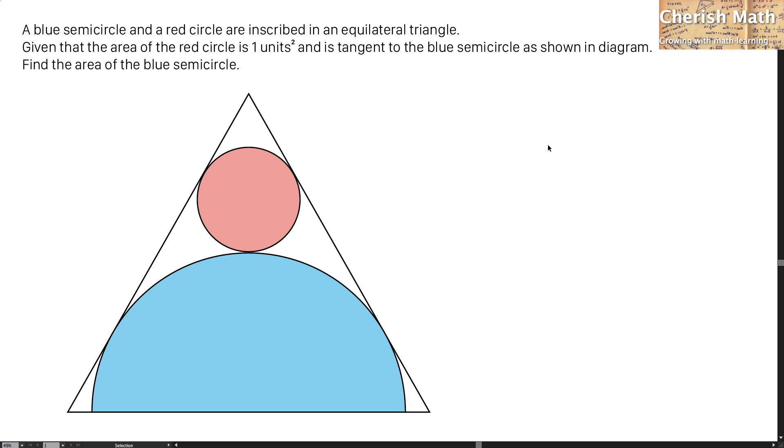Say hi from Cherish Math. This is the problem. A blue semicircle and a red circle are inscribed in an equilateral triangle. Given that the area of the red circle is one unit square and is tangent to the blue semicircle as shown in diagram, find the area of the blue semicircle.